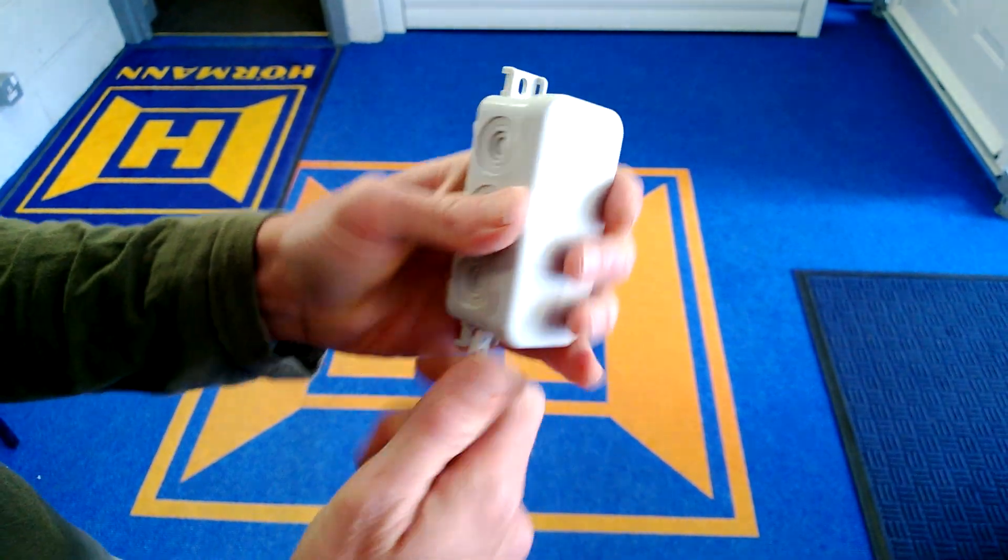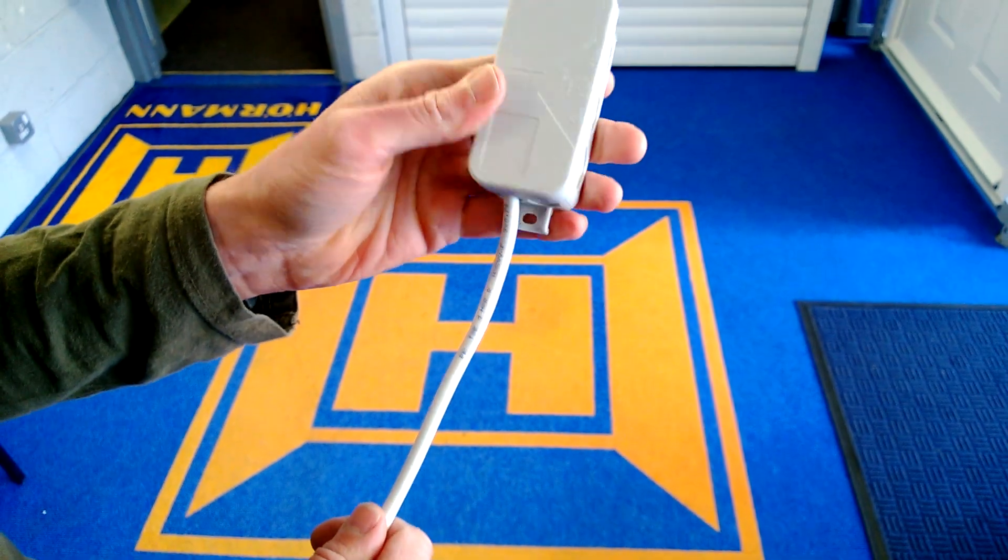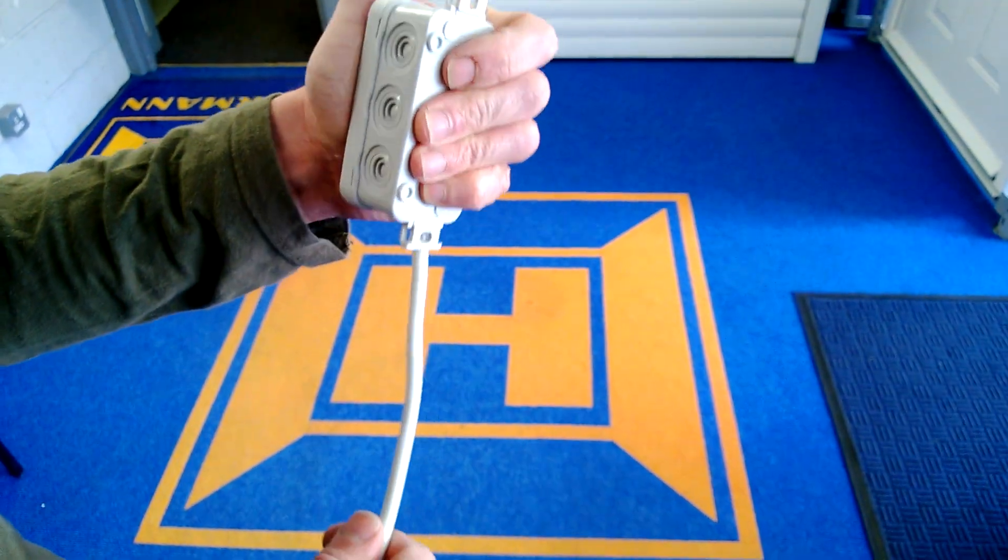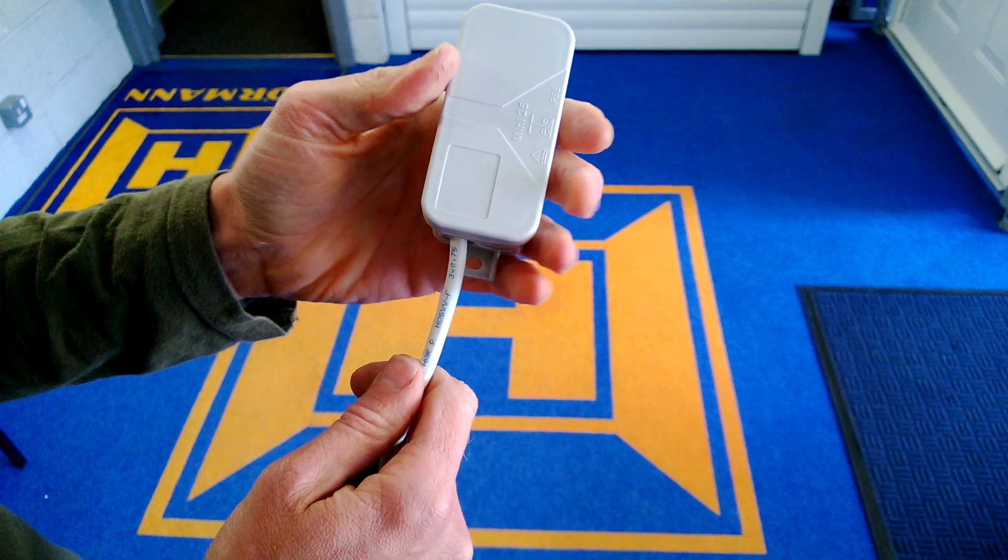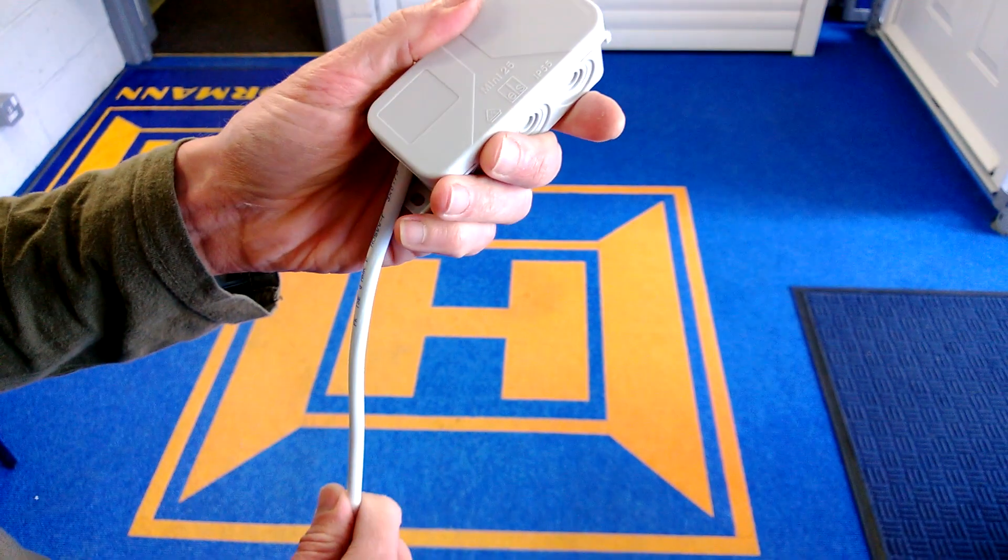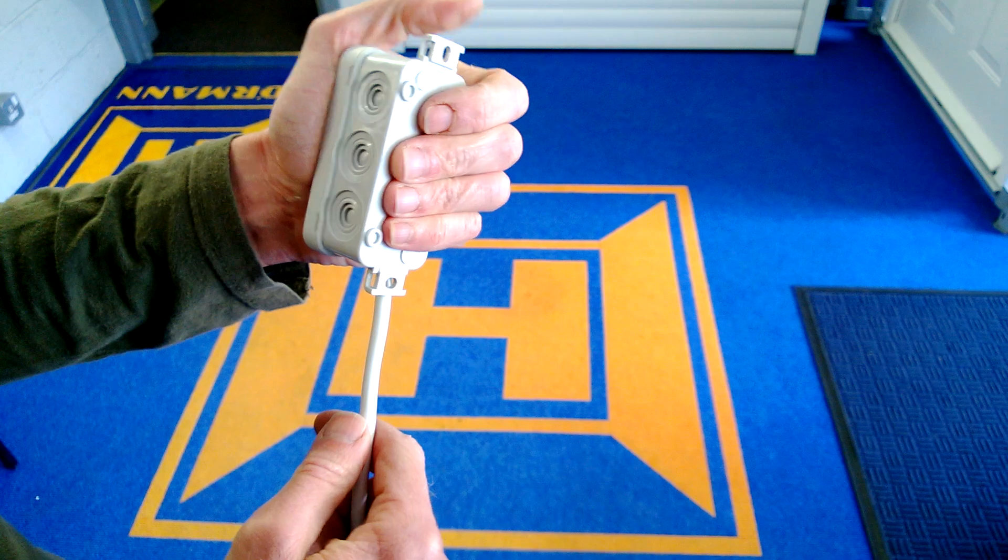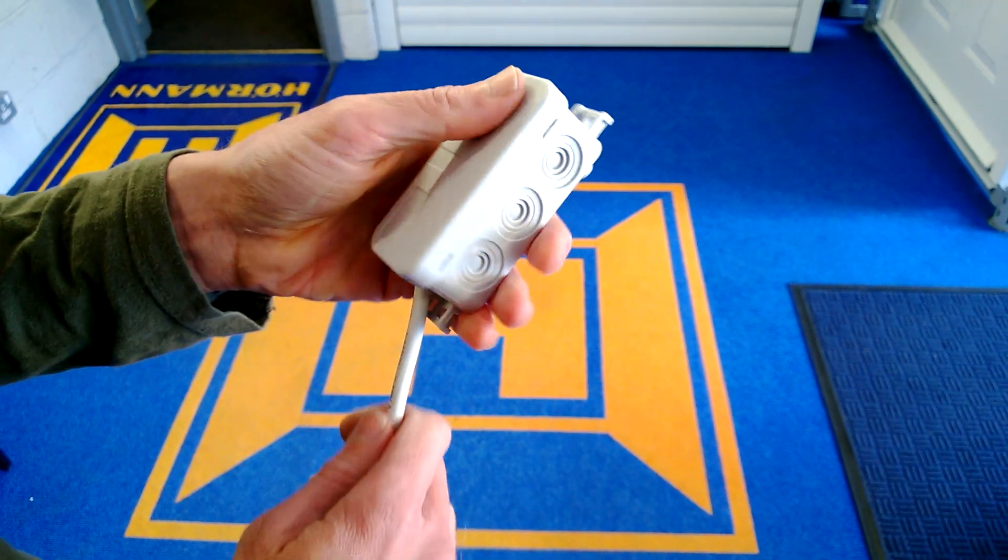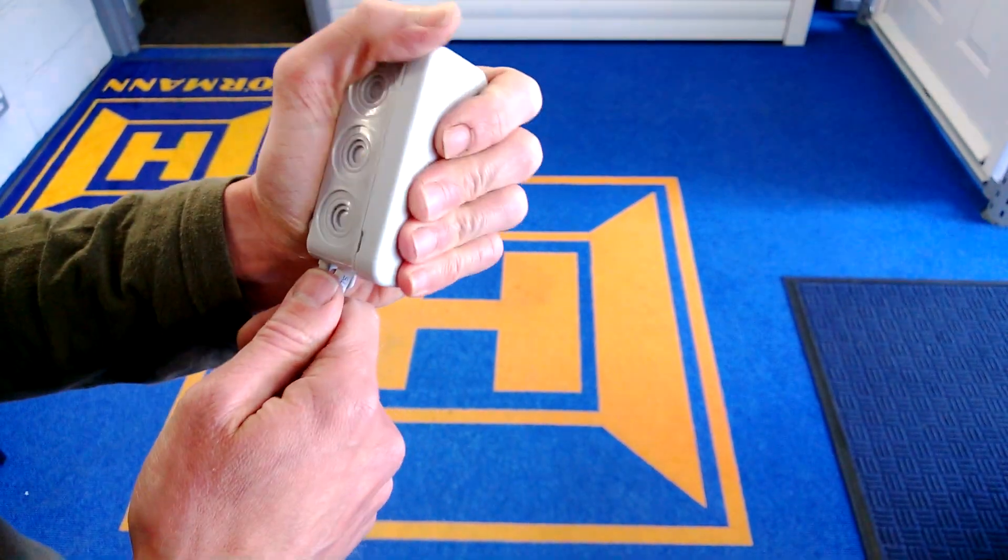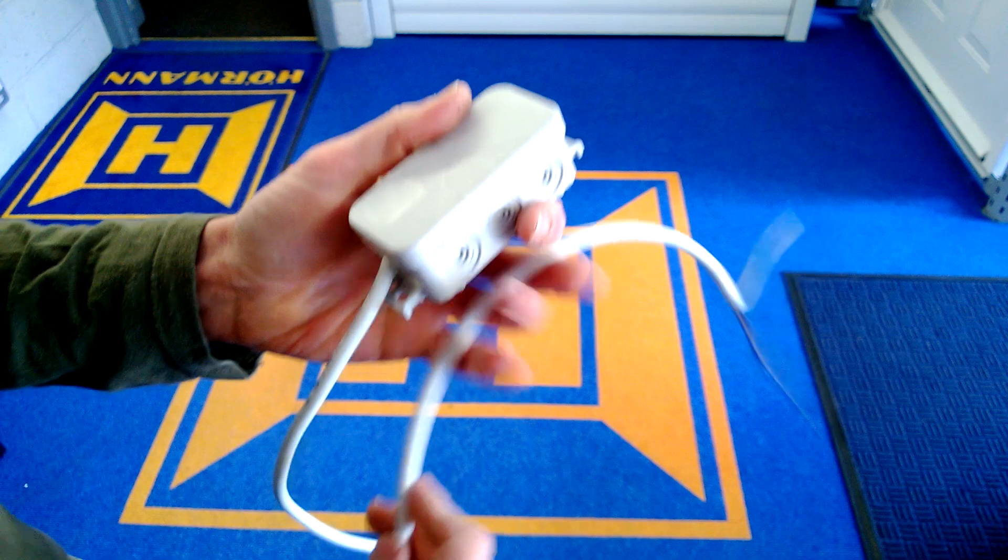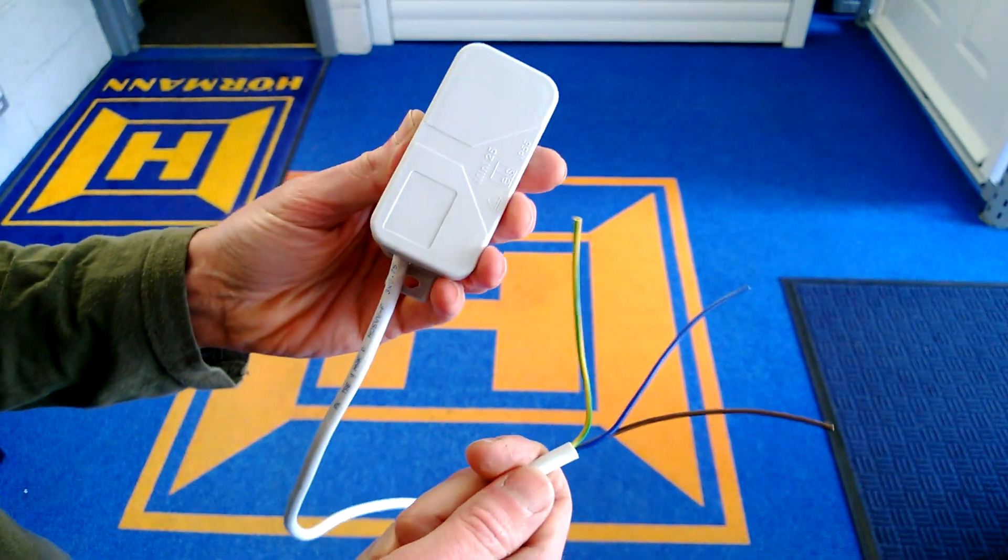And then that can be fastened to the outside of the operator, or possibly, if it's on a gate system, inside the enclosure. It's rated at IP55, so it doesn't really want to be outside. But yeah, that's the Hormann HET 24.